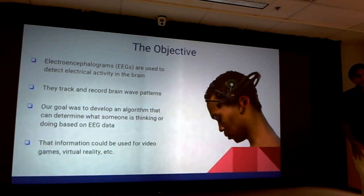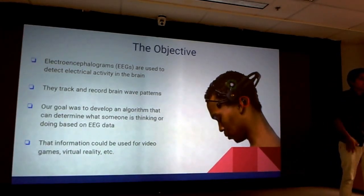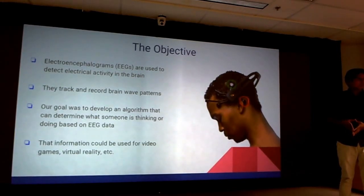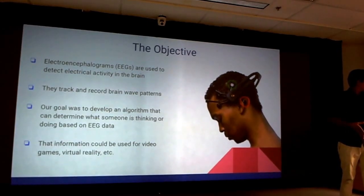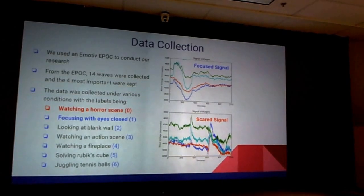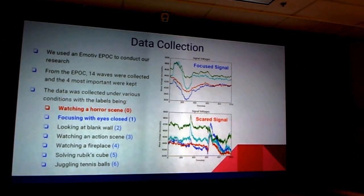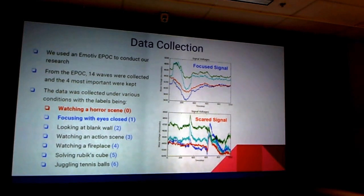The end goal is to create something you can use in a variety of situations, whether it be video games, virtual reality, or any kind of human-computer interface you could think of. We use a device called the Emotiv Epoc for our research. There are 14 nodes on the Epoc that collect 14 different kinds of brain signals.